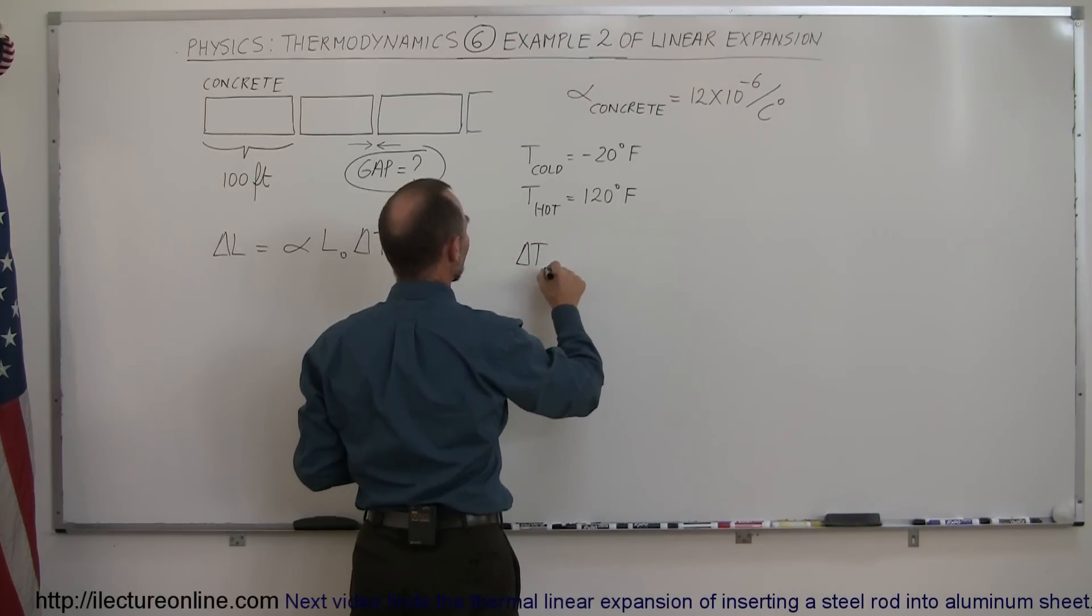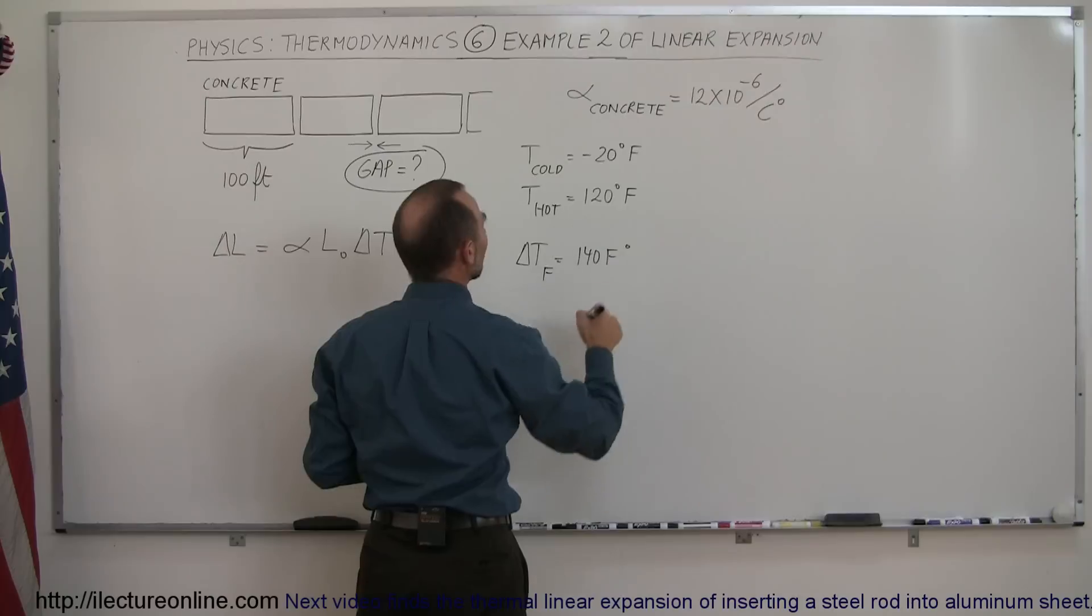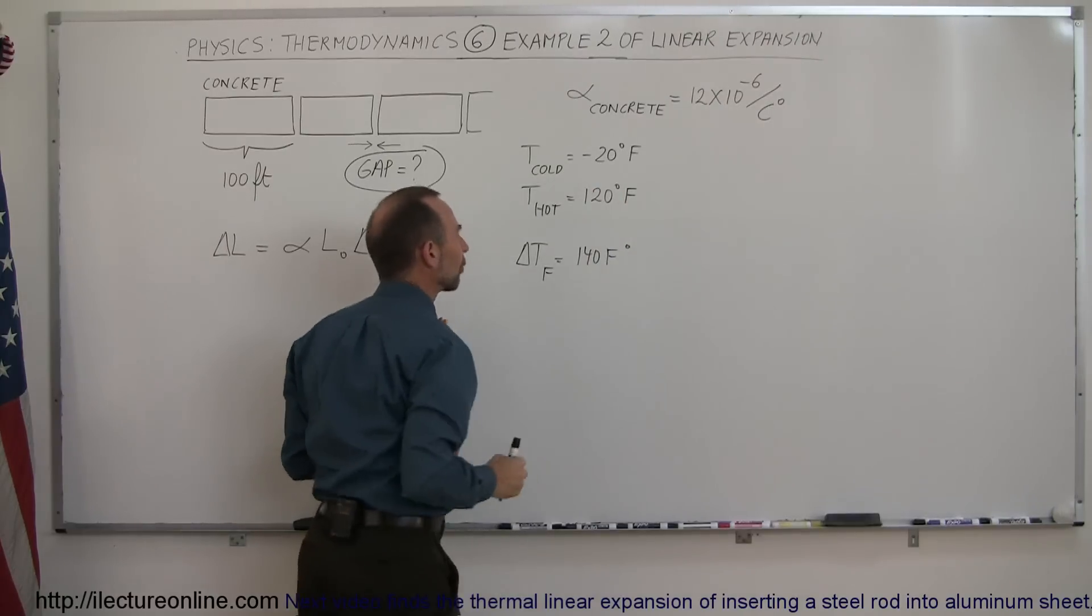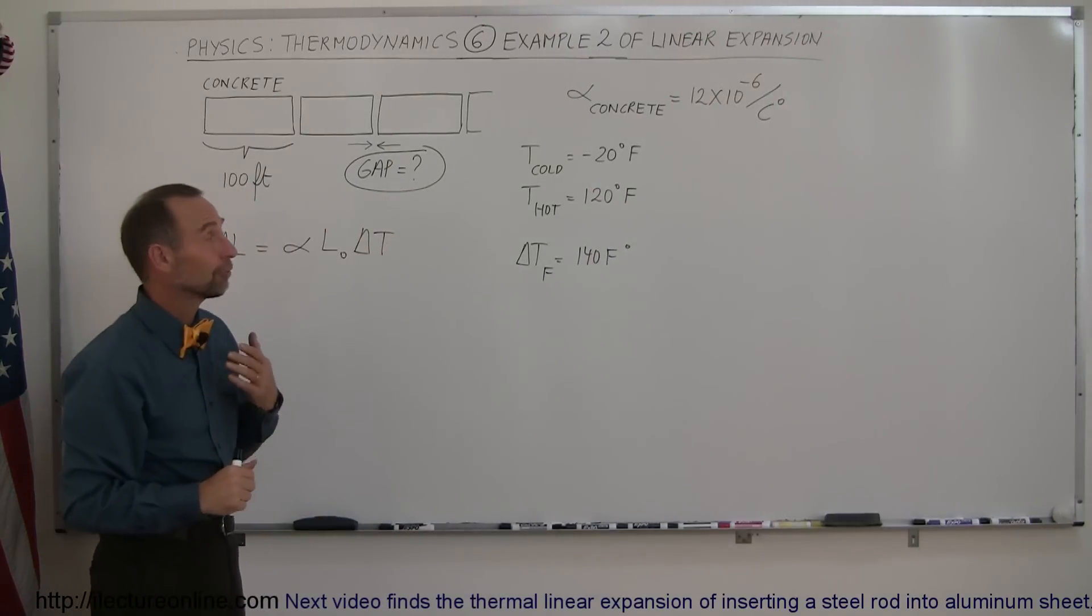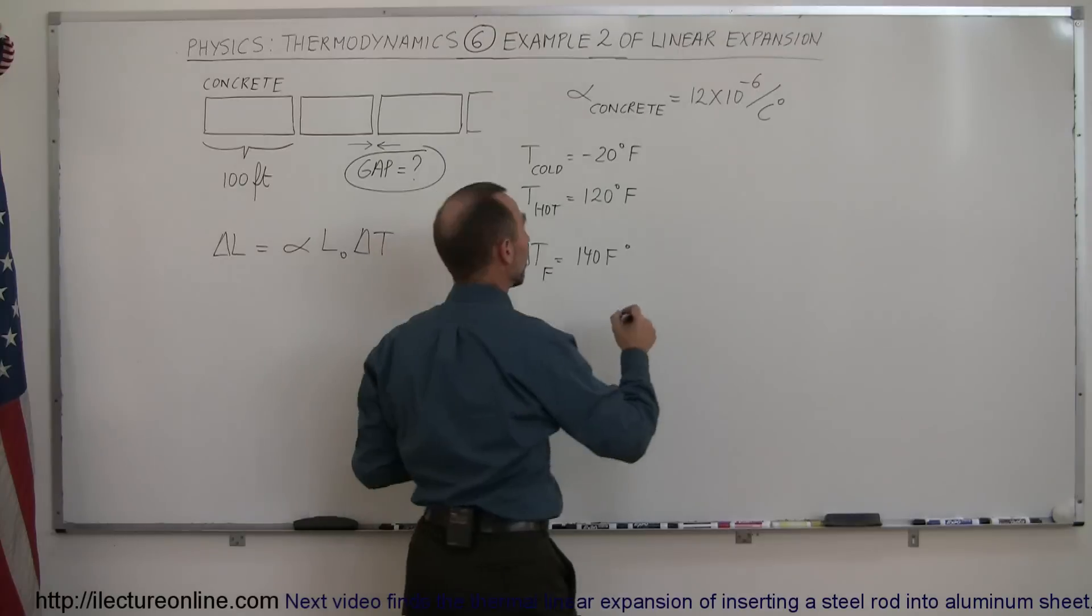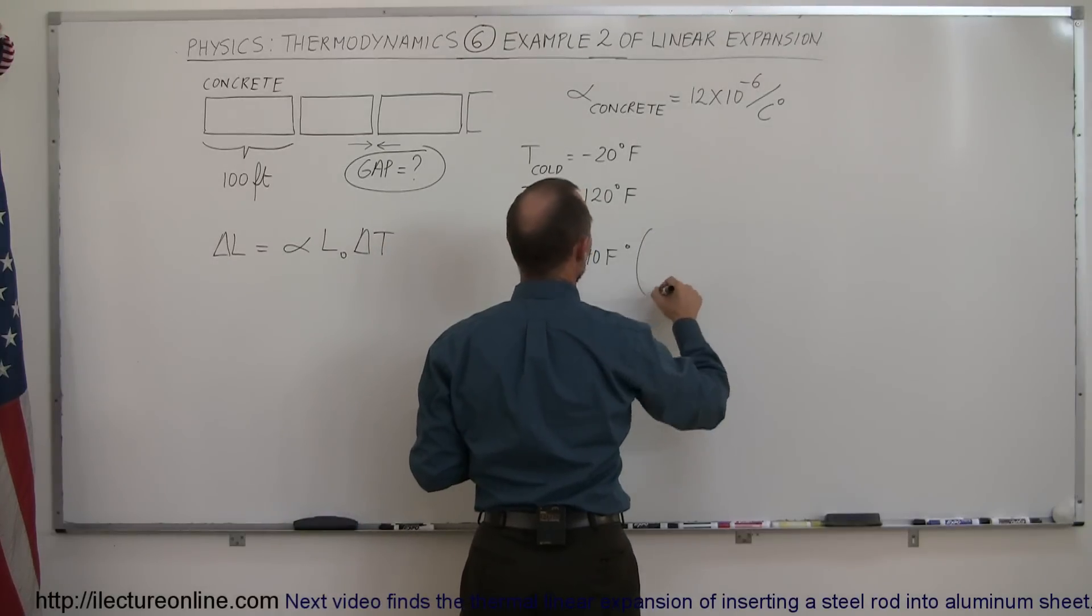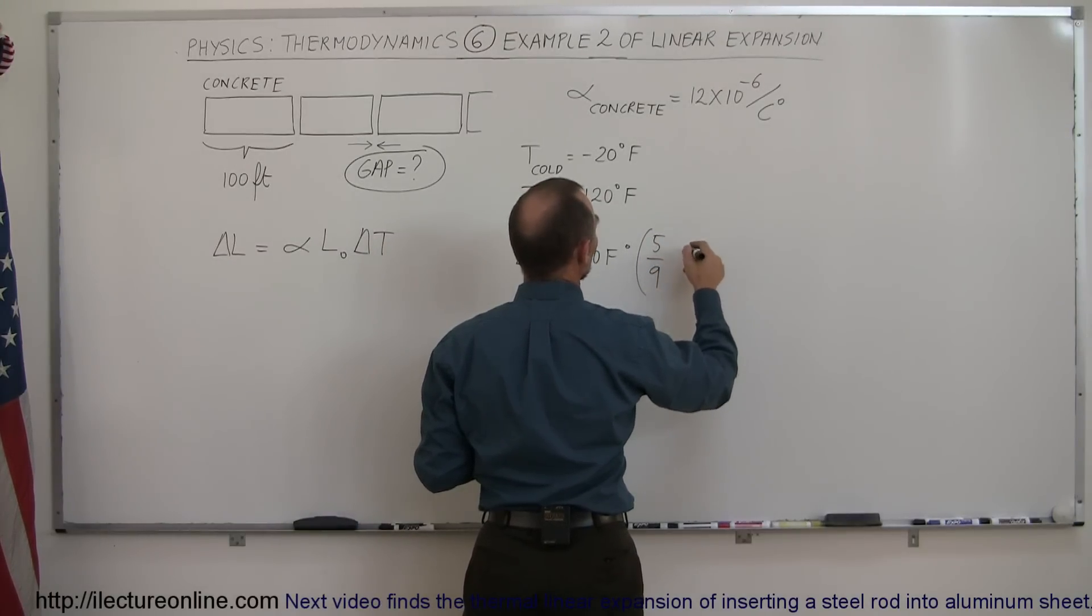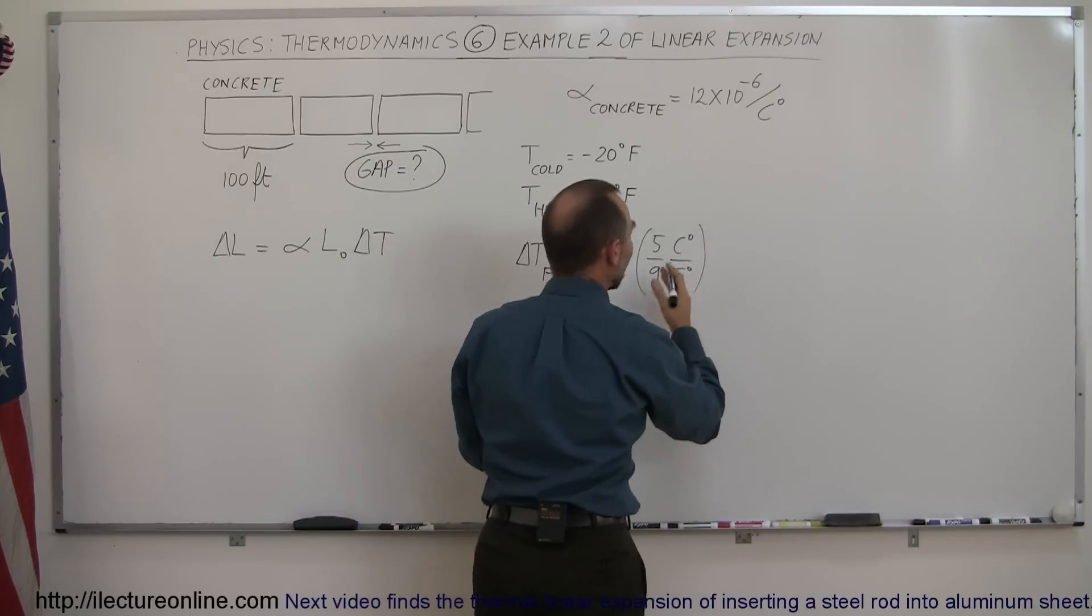So delta temperature in Fahrenheit degrees would be 140 Fahrenheit degrees, because the difference between that is 140 degrees. Then we have to convert that to centigrade degrees, so we multiply that times 5 over 9, because that converts Fahrenheit degrees to centigrade degrees. That's actually a nice little way to write that conversion.